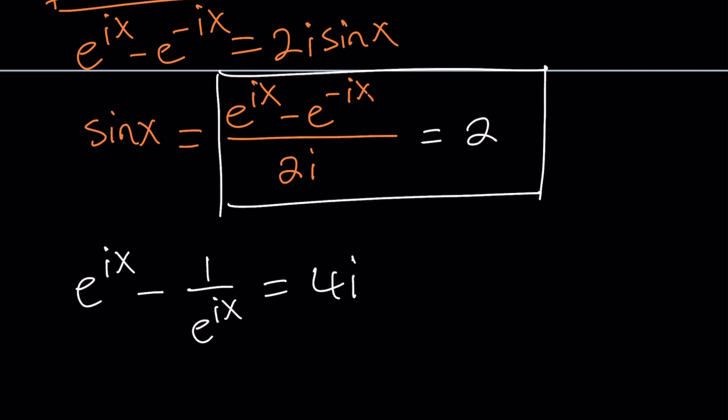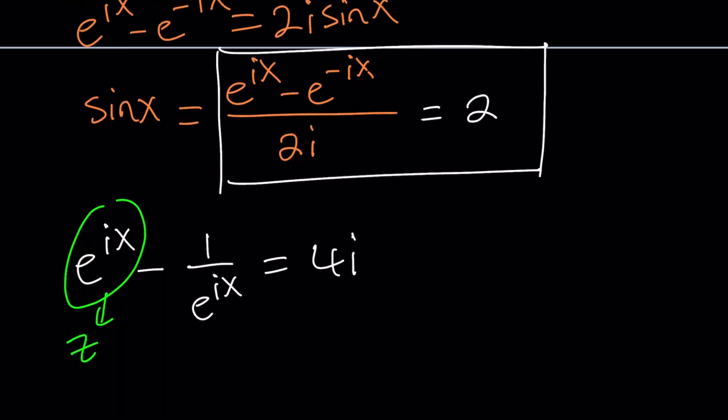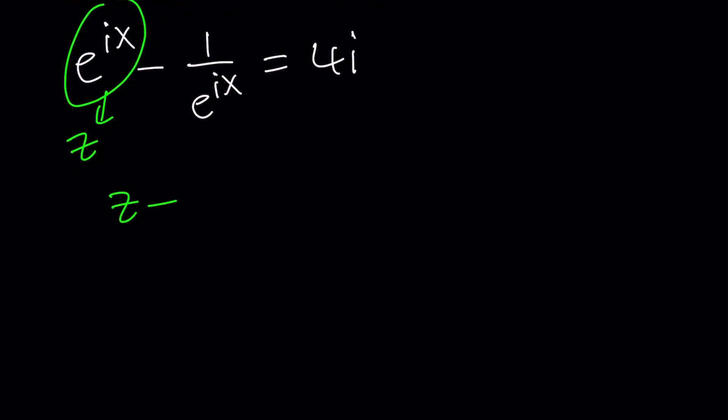And now, we must use substitution. So if you call this something like z maybe, how about z because z is a complex number? We get z minus 1 over z equals 4i. And then we can multiply everything by z. z squared minus 1 equals 4iz. Awesome.